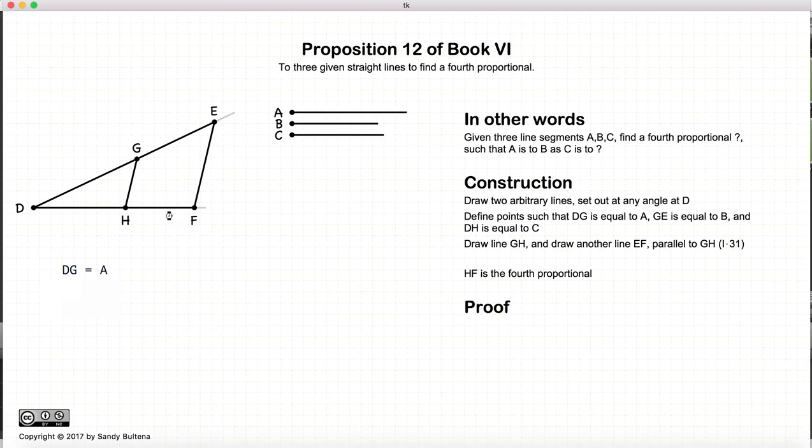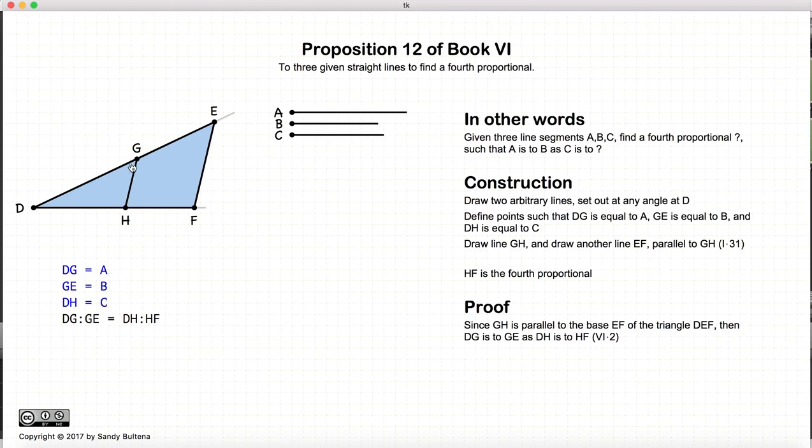So again, how do we prove that this is true? Let's look at the triangle DEF. GH is parallel to EF. So according to Proposition 2 of Book 6, DG to GE equals DH to HF. However, DG equals A, GE equals B, DH equals C. So there we have that HF satisfies this relationship. In other words, A to B is equal to the ratio of C to HF. HF is the fourth proportional.